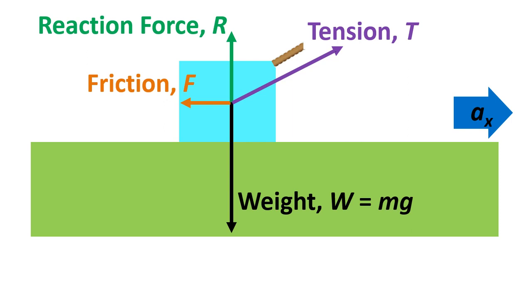We're also told in the question that the object is accelerating at ax meters per second squared. So I'm going to draw in some axes. The y-axis will be anything to do with the vertical, and the x-axis will be anything to do with the horizontal. Hence why ax is the acceleration in the x-axis.